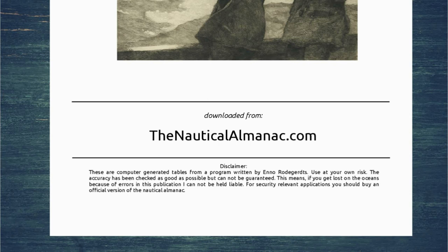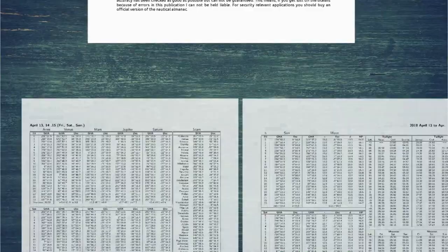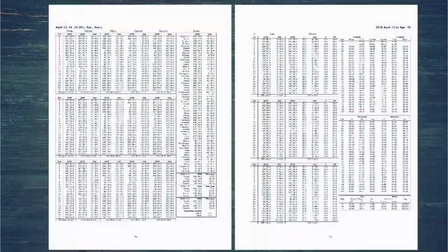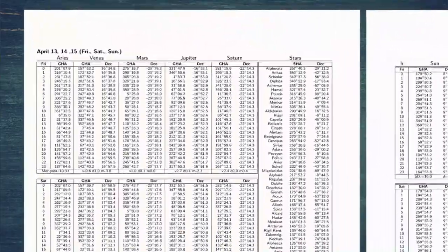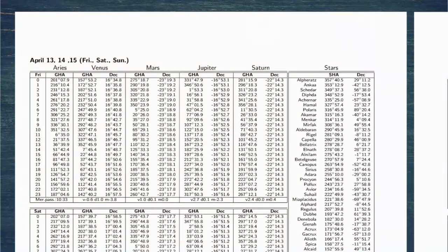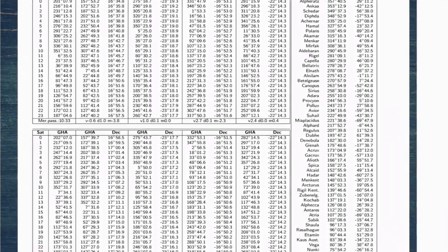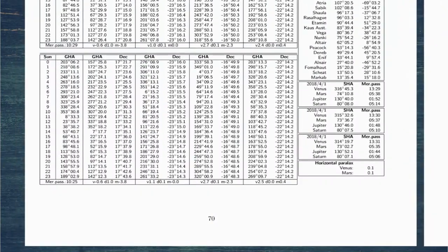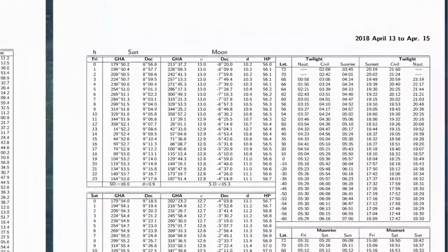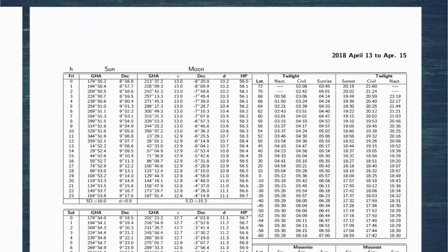Once you've got yourselves a copy, we're going to head across to pages 70 and 71 for today's example. These are the daily pages covering April 13th, 14th, and 15th. Page 70 is the left-hand page and details planets and stars as well as Aries, but we're interested in the right-hand page — page 71 — which has the details for the sun and the moon.